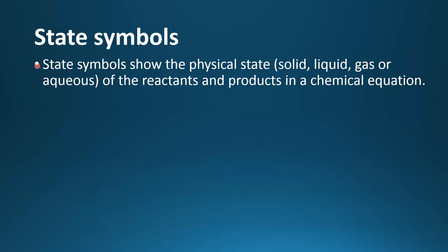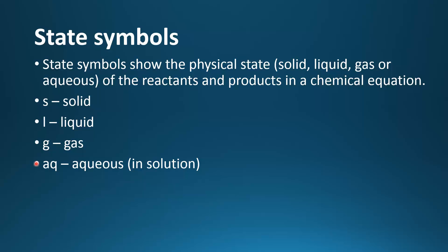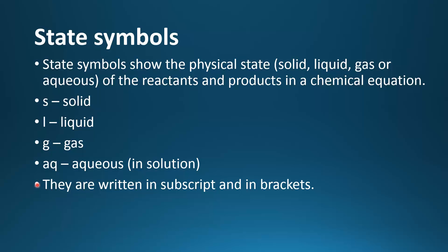Next we look at state symbols. State symbols show the physical state — solid, liquid, gas, or aqueous — of the reactants and products in a chemical equation. The state symbols are: S for solid, L for liquid, G for gas, and AQ for aqueous, which means in solution. They are written in subscript and in brackets.